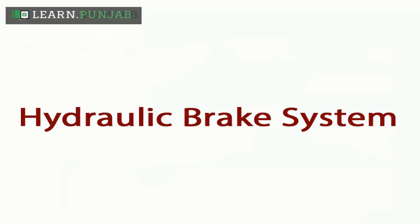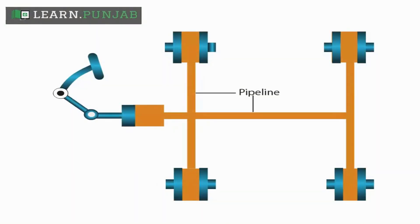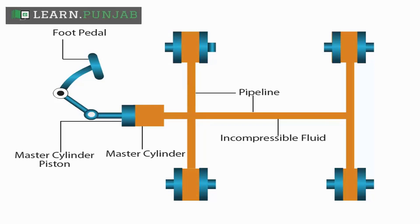Now we see the hydraulic brake system of cars. The hydraulic brake system consists of a pipeline which is filled with incompressible fluid. Its one end is attached with the master cylinder in which the master cylinder piston is fitted, which is attached to the foot pedal of the car.